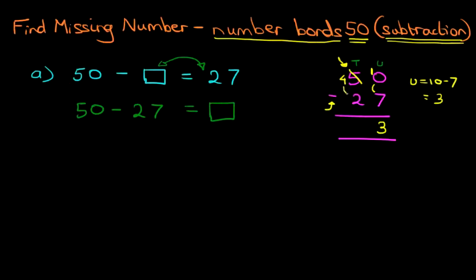Now how about the tens column? We've got 4 minus 2. 4 minus 2 is 2. And that is our answer, 23. 50 minus 27 equals 23. Let's write this in the original question. 50 minus 23 equals 27. And it really is that simple.